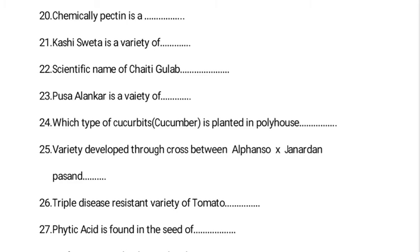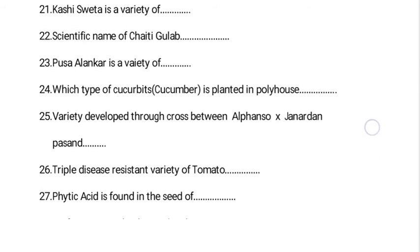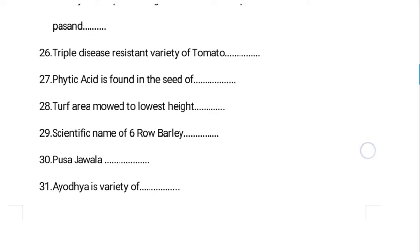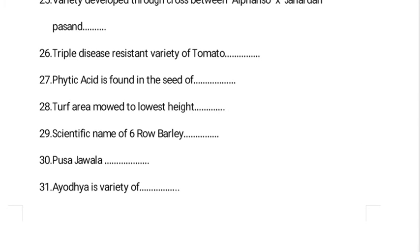Phytic acid is found in the seed of beans — right answer is beans. Turf area mowed to the lowest height: in earlier times it was 1.5 inches, but the current standard suggested height is between 2 and 3.75 inches.